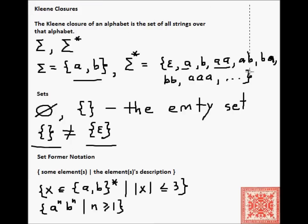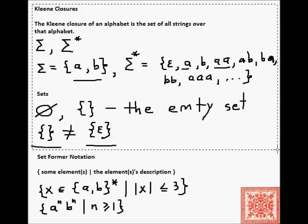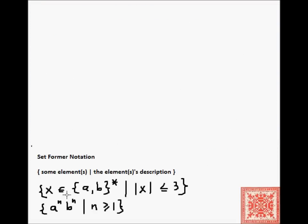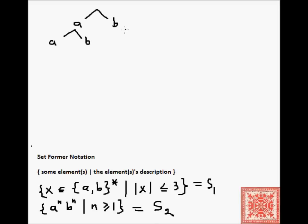Let's grab some white space on the board. Let's call the first set S1 and the second set S2. Can we enumerate the elements in S1? Yes, we can. We can use a tree of possibilities — we'll start with nothing, then on the first symbol, we have a choice of a and b.